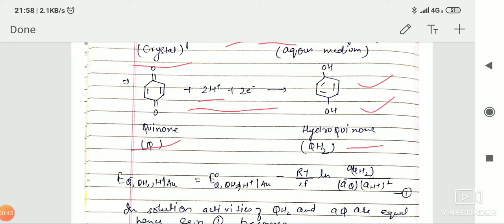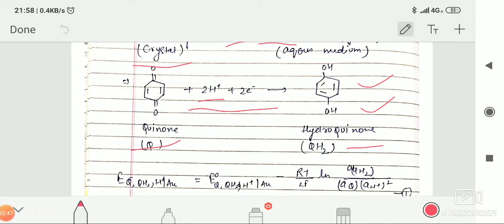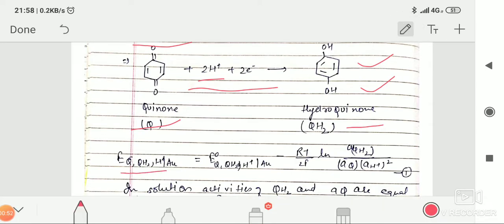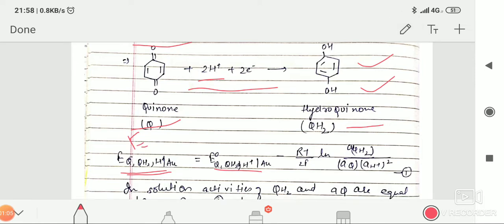How will you write the EMF of the Nernst equation of this reaction? E of the cell equals E naught minus—I am just denoting the E of the cell by this hydroquinone symbol. E equals E naught minus RT upon 2F ln, 2 is because here 2 electrons are used, and activity of hydroquinone divided by activity of quinone and activity of H+ concentration raised to the power 2.